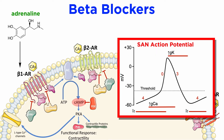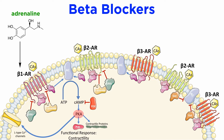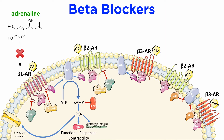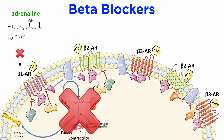cAMP increases the functionality of the HCN channel, which increases funny sodium current, leading to increased sodium current in phase IV of the SAN action potential. cAMP also activates protein kinase A, which phosphorylates sites on the sarcoplasmic reticulum, which in turn increases calcium release and myosin light chain activity. Antagonism of the beta-1 adrenoceptor will therefore block the effects of circulating adrenaline and sympathetic innervation, which slows heart rate and can bring about normal cardiac rhythm.